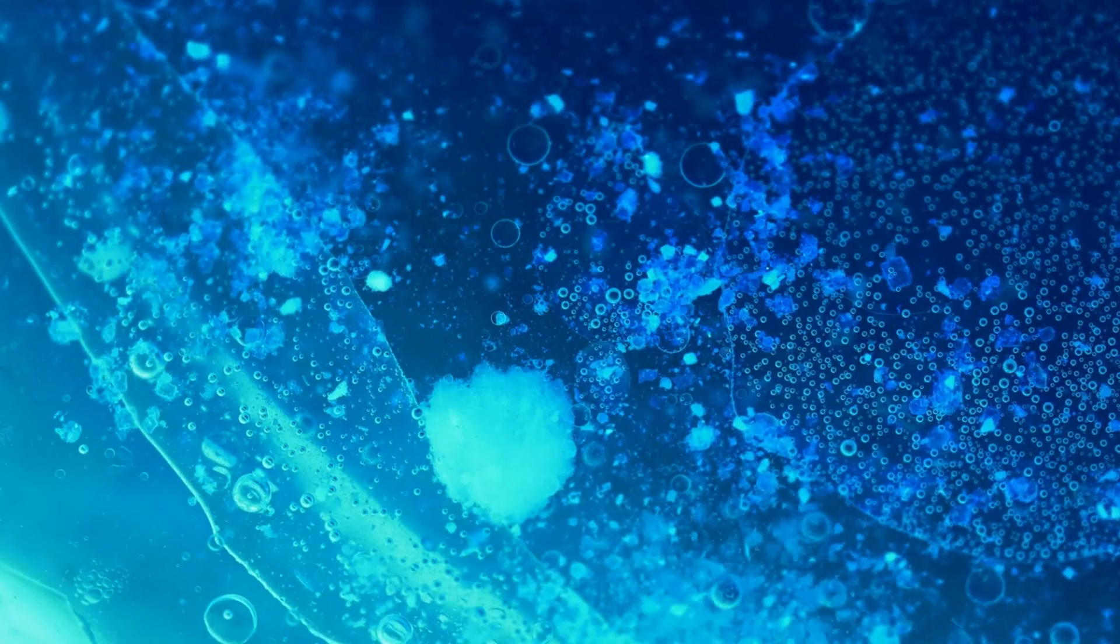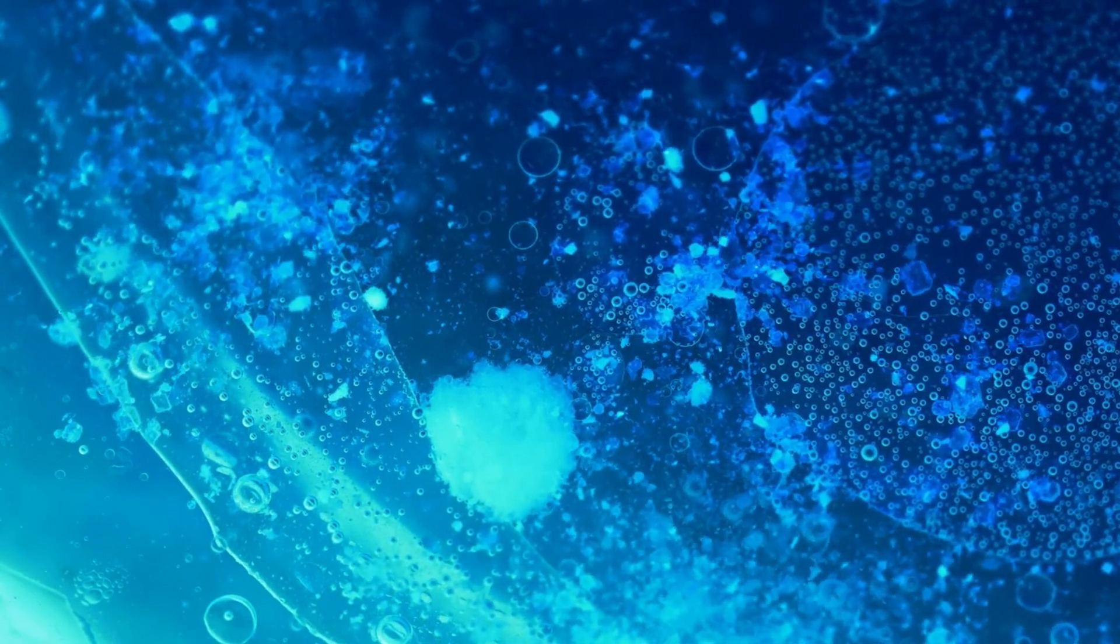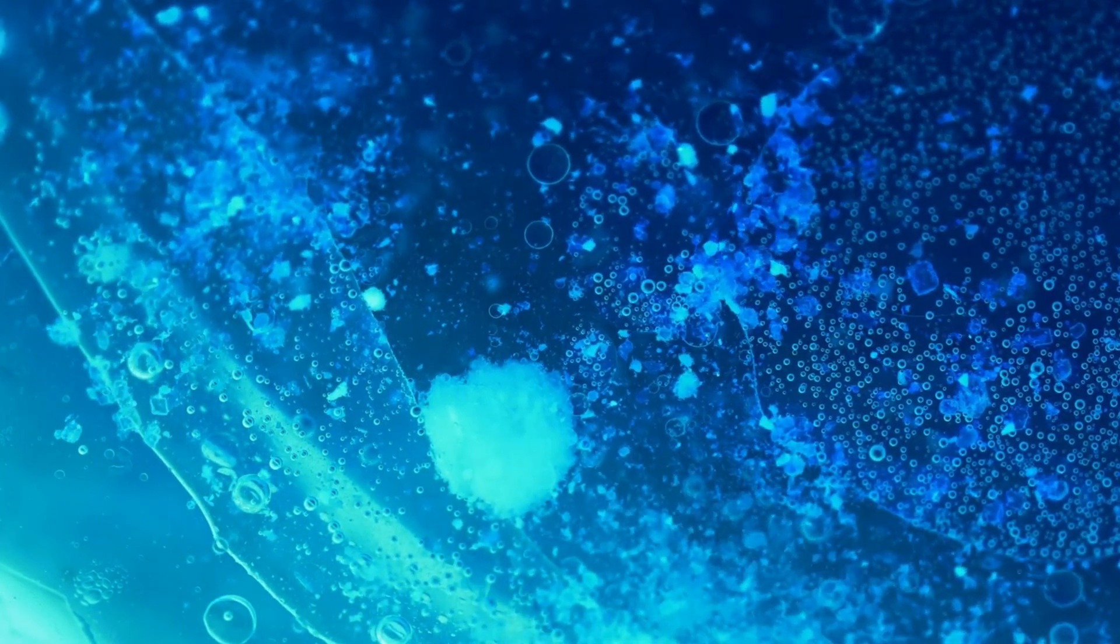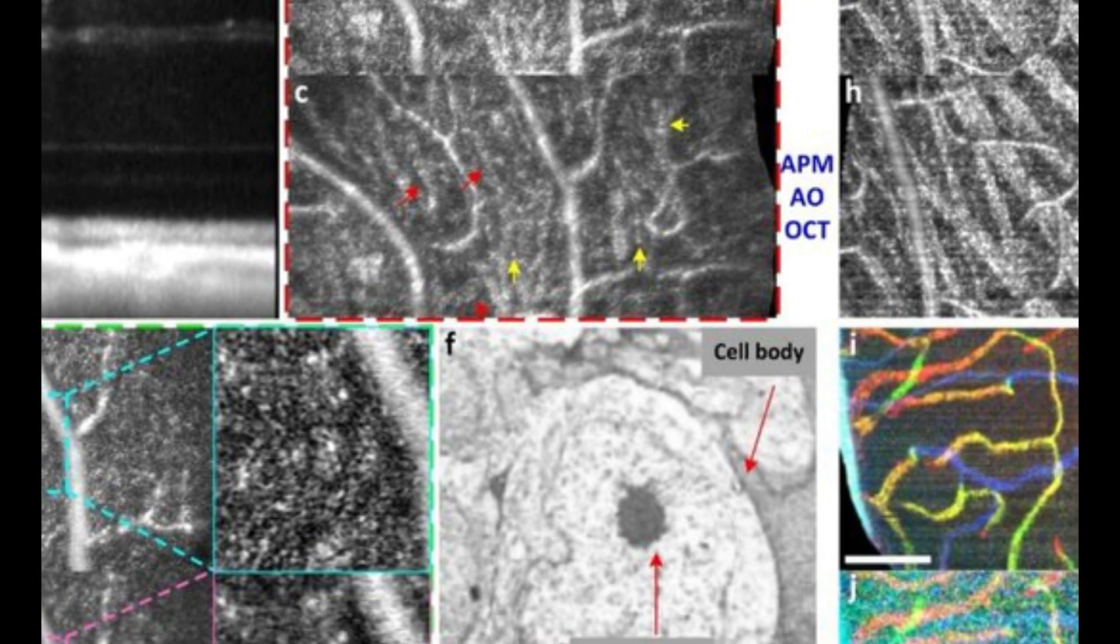Cellular Scale: As we continue our journey through the cosmic scale, we reach the cellular level, where life's complexity begins to emerge. Cells are the fundamental units of life, ranging in size from a few micrometers to the visible eye.